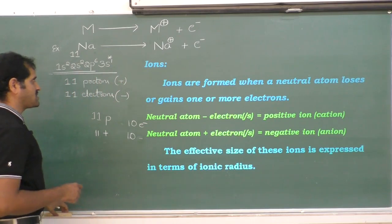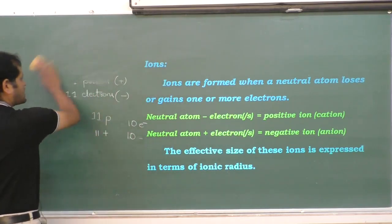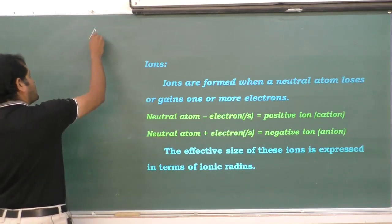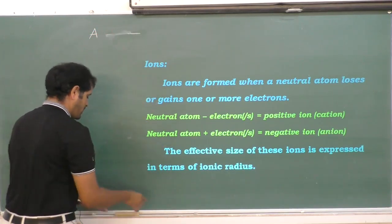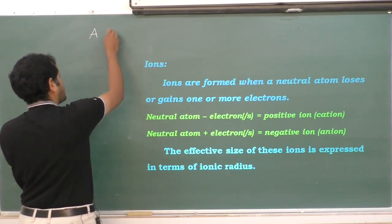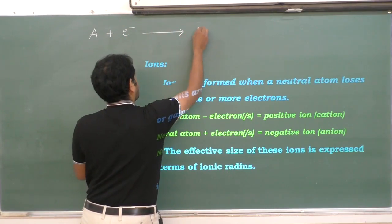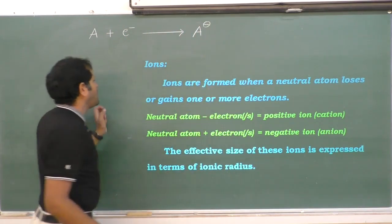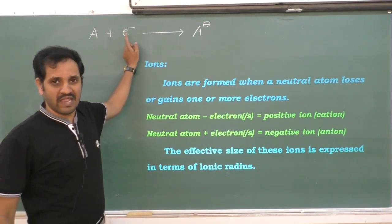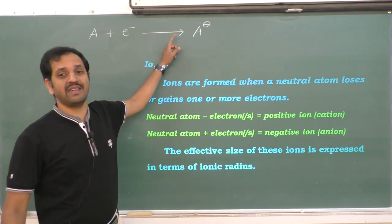Similarly, we shall look into anions. Consider a neutral atom. When one electron is added to its valence shell or outermost shell, it develops a negative charge. When a neutral atom gains one or more electrons, a negative ion called an anion is generated.